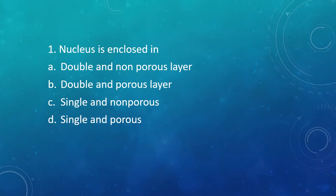Question 1: Nucleus is enclosed in — Option A: Double and non-porous layer. Option B: Double and porous layer. Option C: Single, non-porous layer. Option D: Single and porous layer. The correct answer is Option B, that is double and porous layer. The question is asking about the nuclear membrane, which is a double-layered membrane and the layers are porous.